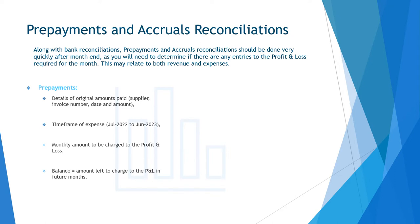Prepayment balance sheet accounts may include things like prepaid insurances, prepaid rent, or accrued revenue — which is an allowance for revenue in the current month invoiced in the next month. Prepayments reconciliations should include details of the original amounts paid, supplier, invoice number, date and amount, the time frame of the expense, and the monthly amount to be charged to the profit and loss. The balance will equal the amount left to charge to the profit and loss in future months.